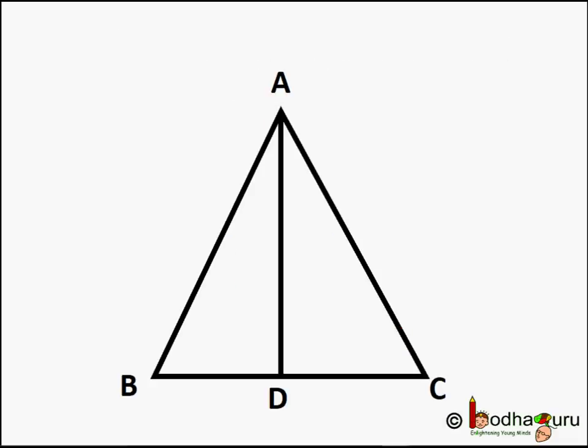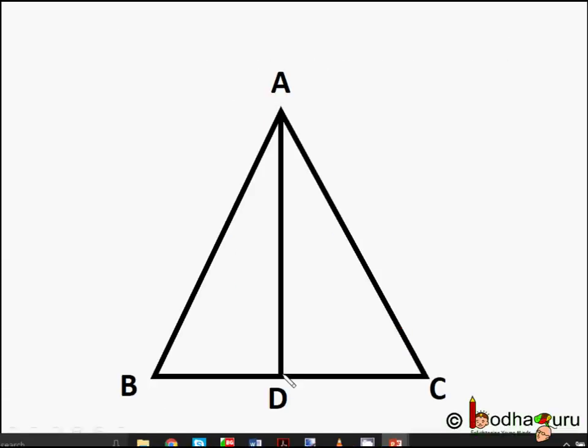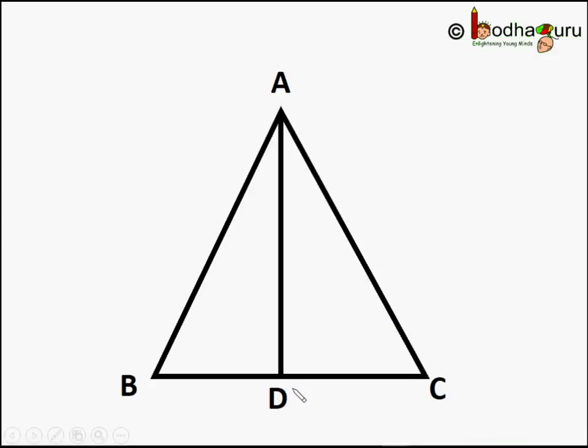So we draw a bisector of angle A which intersects BC at D. So in triangle BAD and CAD, AB is equal to AC. It was given as an isosceles triangle.